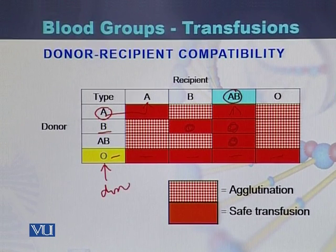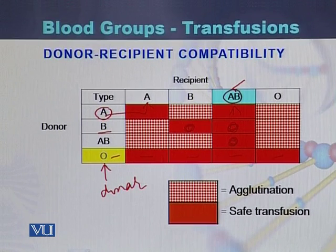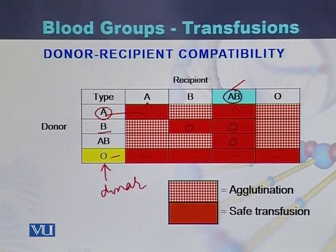Blood group O can be donated to any individual with blood group A, B, AB, or O. Blood group AB is the universal recipient or universal acceptor, and can receive any blood group.